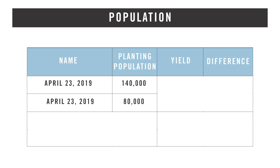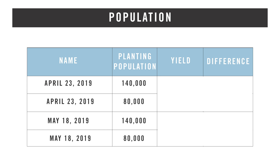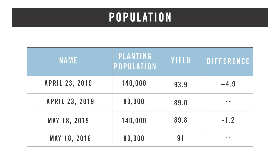For our population trial, we compared the April 23rd date at 140,000 versus 80,000, and the May 18th date at 140,000 versus 80,000. With the May 18th plant date, since we didn't have as much stress as April 23rd, yield was very comparable — we didn't see much of a difference between the two populations. For the April 23rd plant date, the 140,000 actually beat the 80,000 by about five bushel, because we gave up some stand on both due to April stress and were able to push the 140,000 a little further. But at the May 18th date, at 80,000 we were able to grow the same amount of beans as at 140,000, saving 60,000 beans per acre on seed costs — definitely something to consider when planning for 2020.